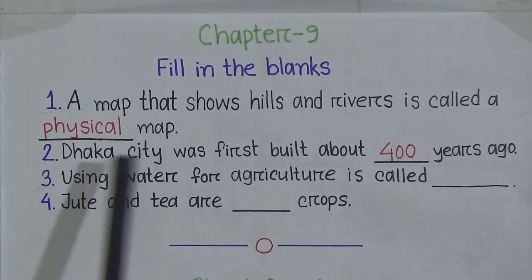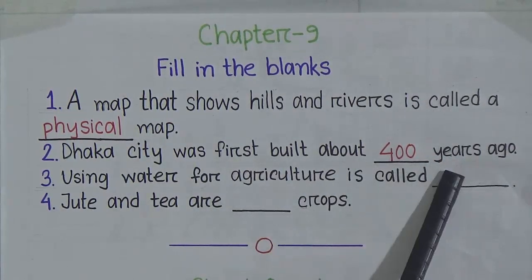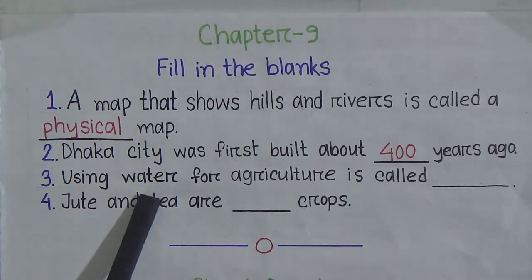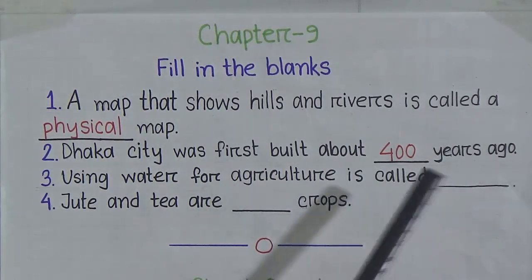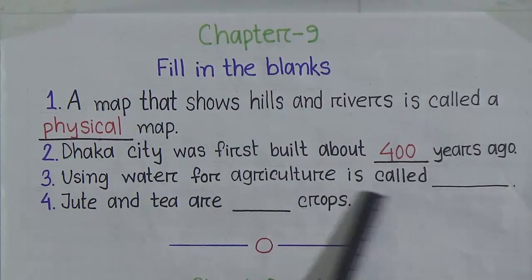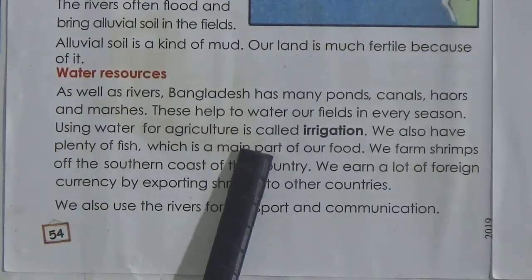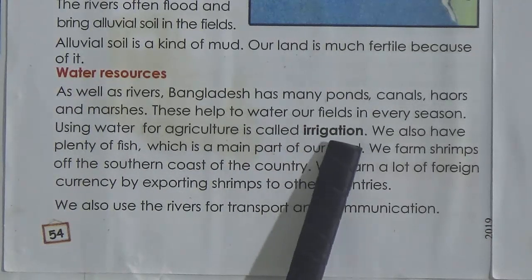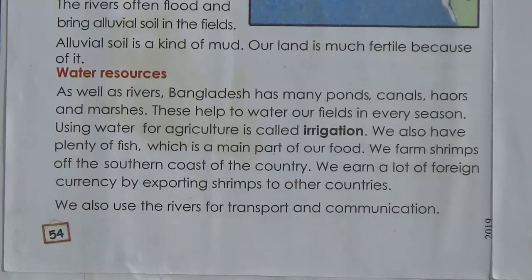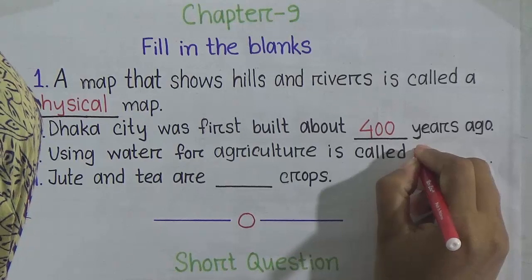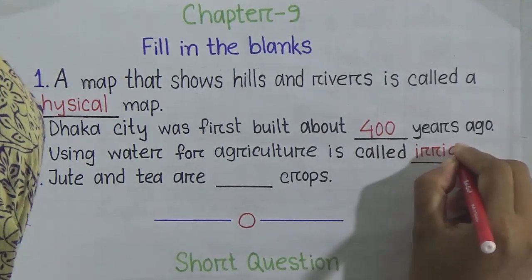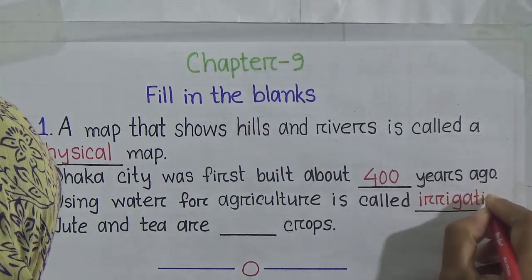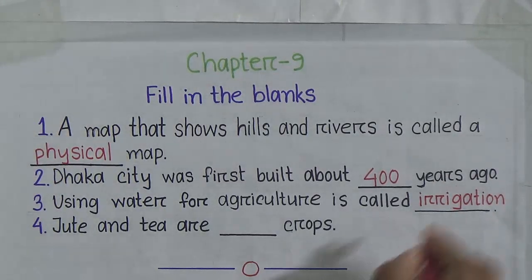Number 3: 'Using water for agriculture is called ___.' I hope you know the answer — using water for agriculture is called irrigation. You'll find this answer in lesson 3, page number 54. Spell the word: I-R-R-I-G-A-T-I-O-N, irrigation. So in the gap we have to write 'irrigation.' The sentence will be: using water for agriculture is called irrigation.